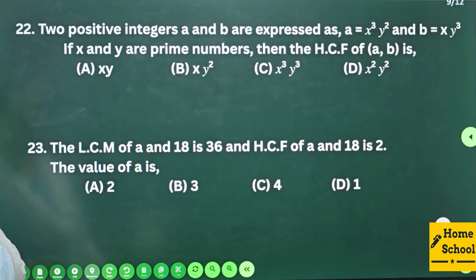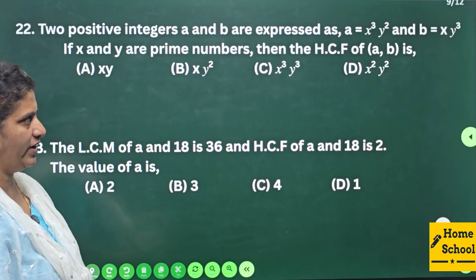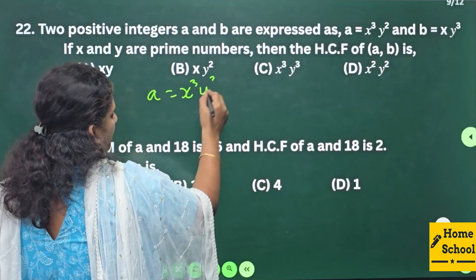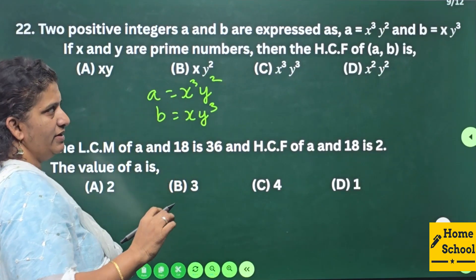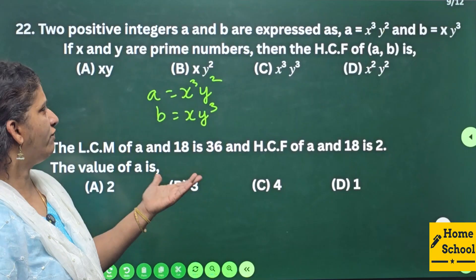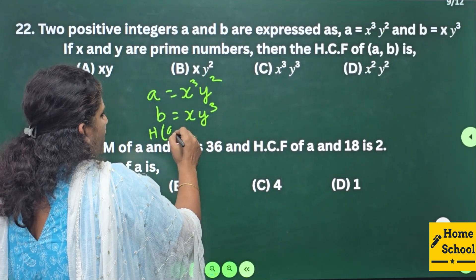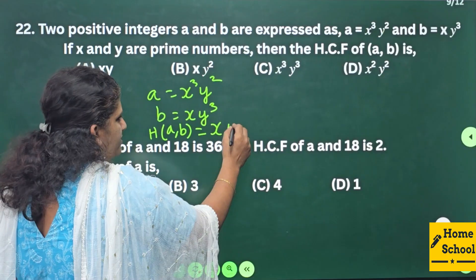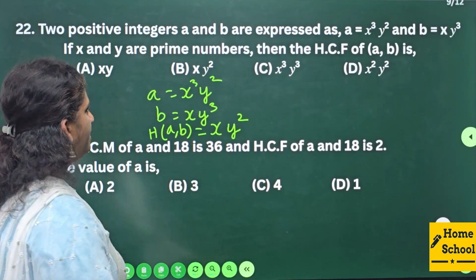Question 22: Two positive integers a and b are expressed as a = x³y² and b = xy³. If x and y are prime numbers, then the HCF of a and b is — here we have 3 x's and there 1 x, so 1 x is common. Here 2 y's and there 3 y's, so 2 y's (y²) are common. Therefore HCF(a, b) = xy² — option B.